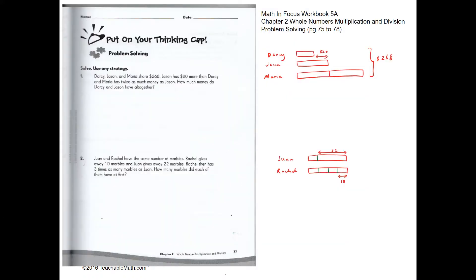Problem solving — these two questions are slightly more challenging. Darcy, Jason and Mario have $268 altogether. Jason has $20 more than Darcy, and Mario has twice as much as Jason. If we draw a bar model: Darcy has one unit, Jason has one unit plus $20 more, and Mario has double Jason's amount — two units. So together they have $268.